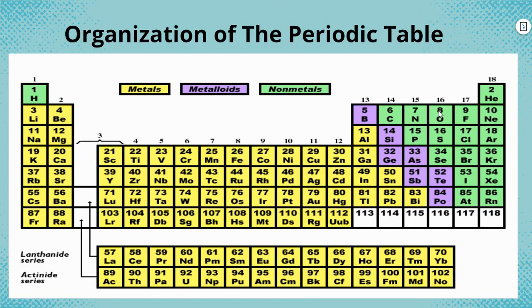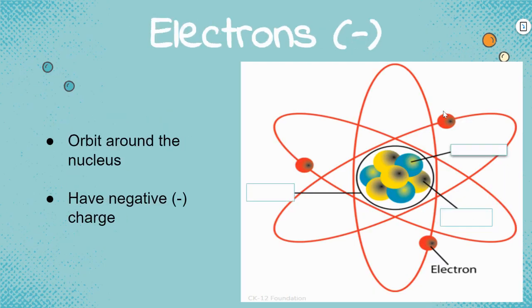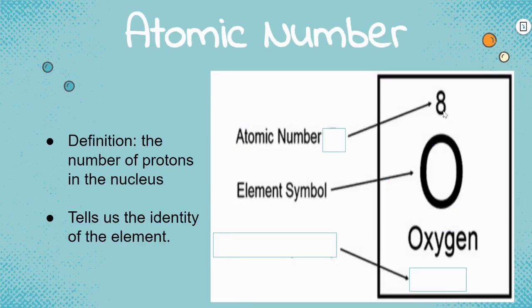This eight is, again, kind of saying the address, but it's really telling you these are the number of protons inside of an atom. So the atomic number is the number of protons in the nucleus, and it tells us the identity of the element.